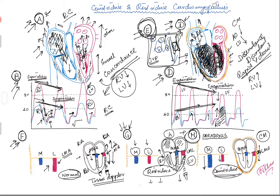Although the medial mitral annulus is a structure inside the heart and usually does not move much, in constrictive pericarditis the lateral mitral annulus is encapsulated and restricted by the rigid pericardium, so it cannot move. All movement has to occur inside the heart — and that is why the medial mitral annulus is displaced more in constrictive pericarditis, a finding called annulus paradoxus.